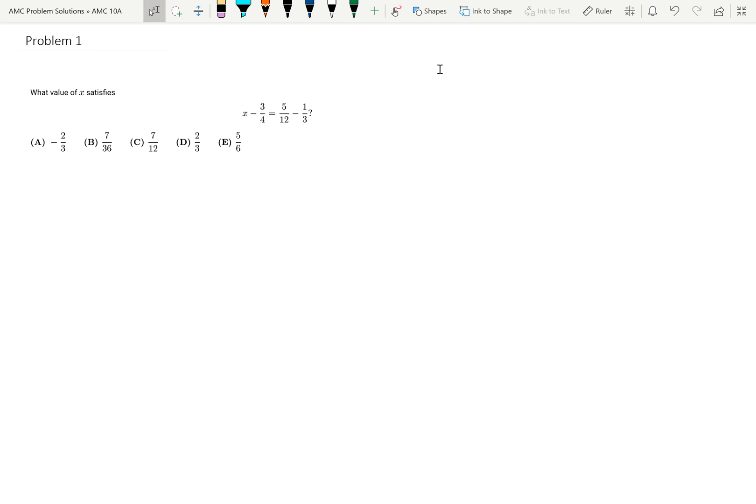X is going to satisfy the following equation. I'm going to start by writing it out. So x minus 3 fourths is equal to 5 twelfths minus 1 third.